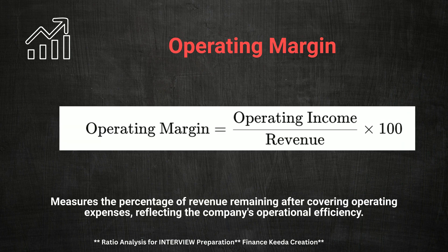Following closely is Operating Margin, which measures the percentage of revenue that remains after covering operating expenses. The calculation is straightforward: Operating Margin equals Operating Income divided by Revenue. Interviewers may ask: what is the difference between Gross Margin and Operating Margin? While Gross Margin focuses solely on the cost of goods sold, Operating Margin accounts for all operating expenses, providing a more comprehensive view of a company's profitability. Being able to articulate these differences will showcase your financial acumen.